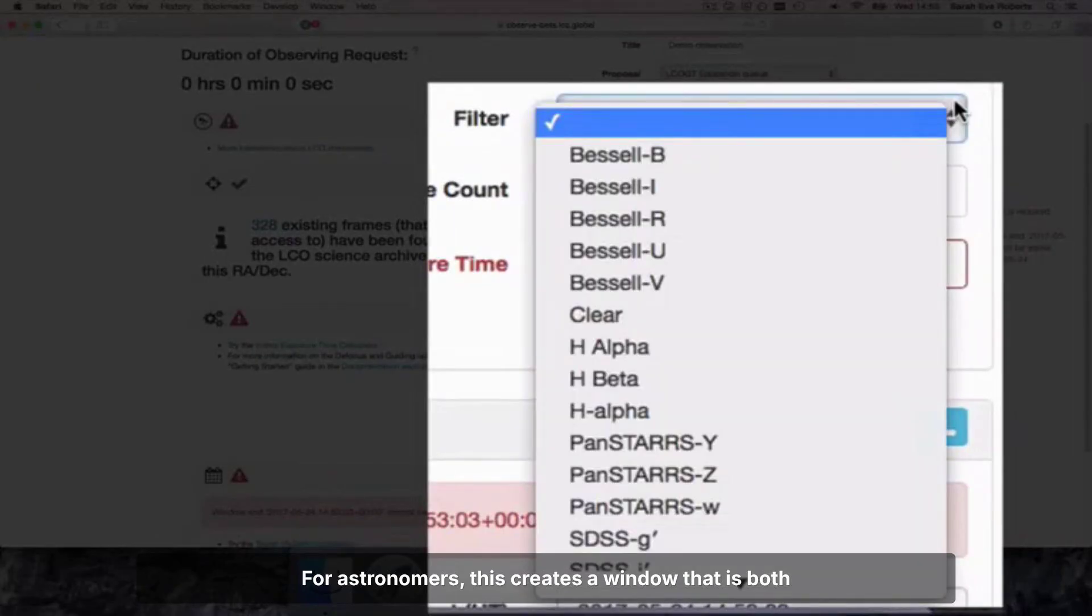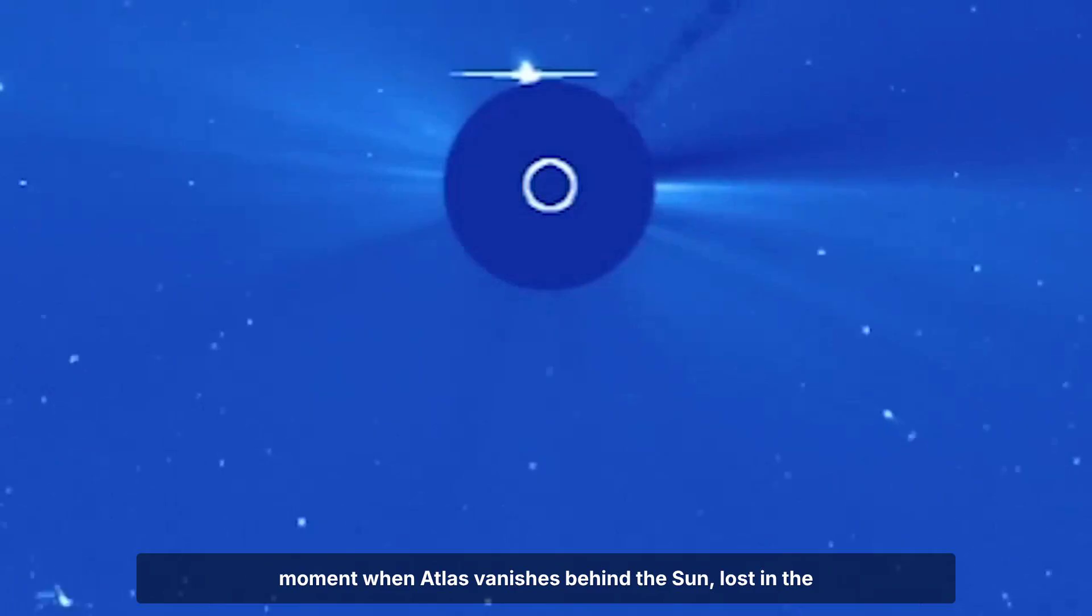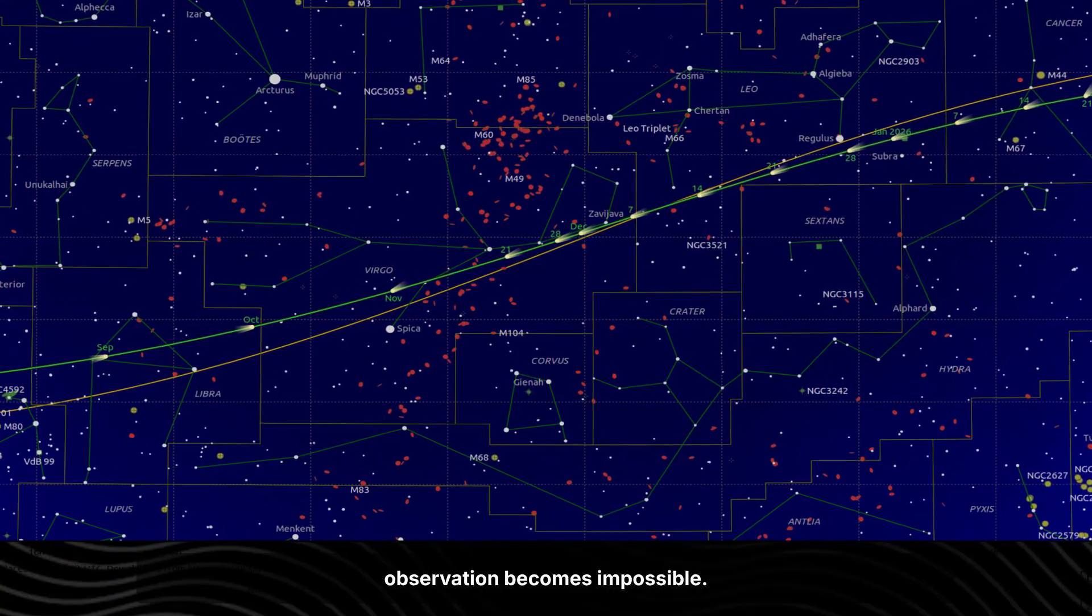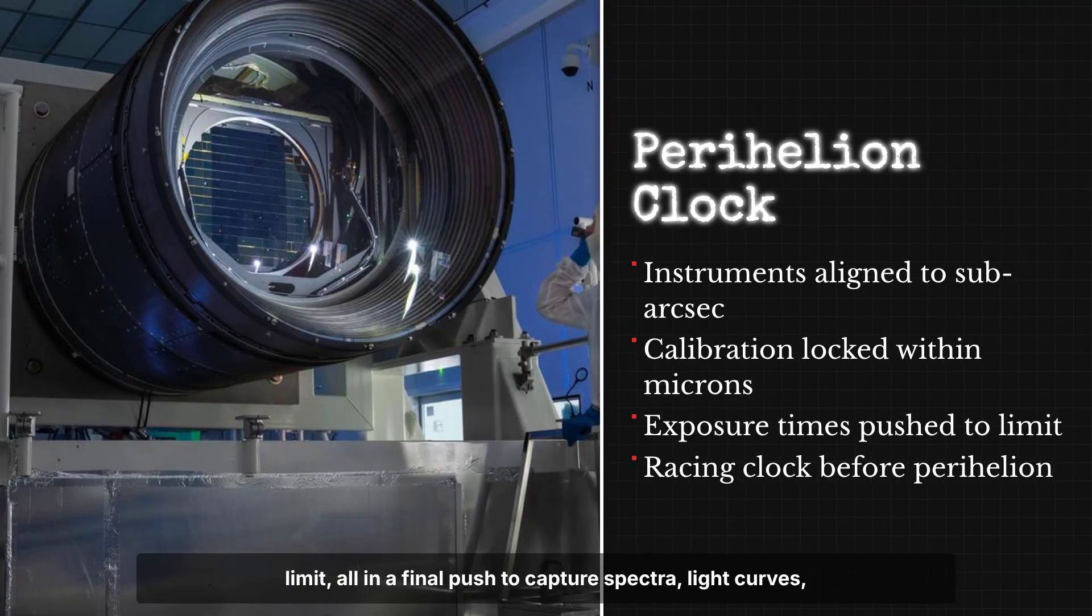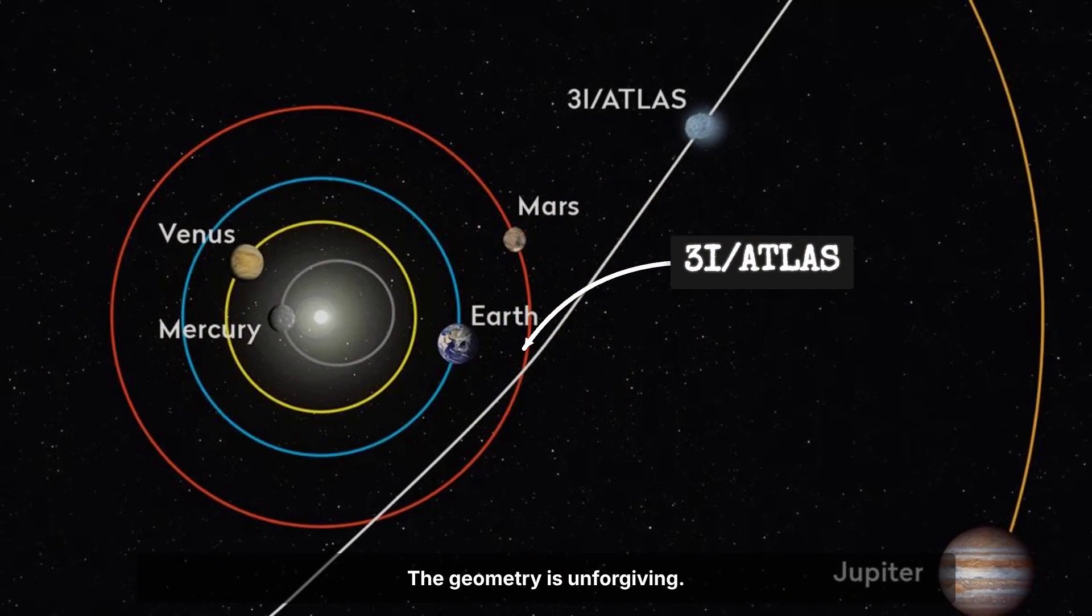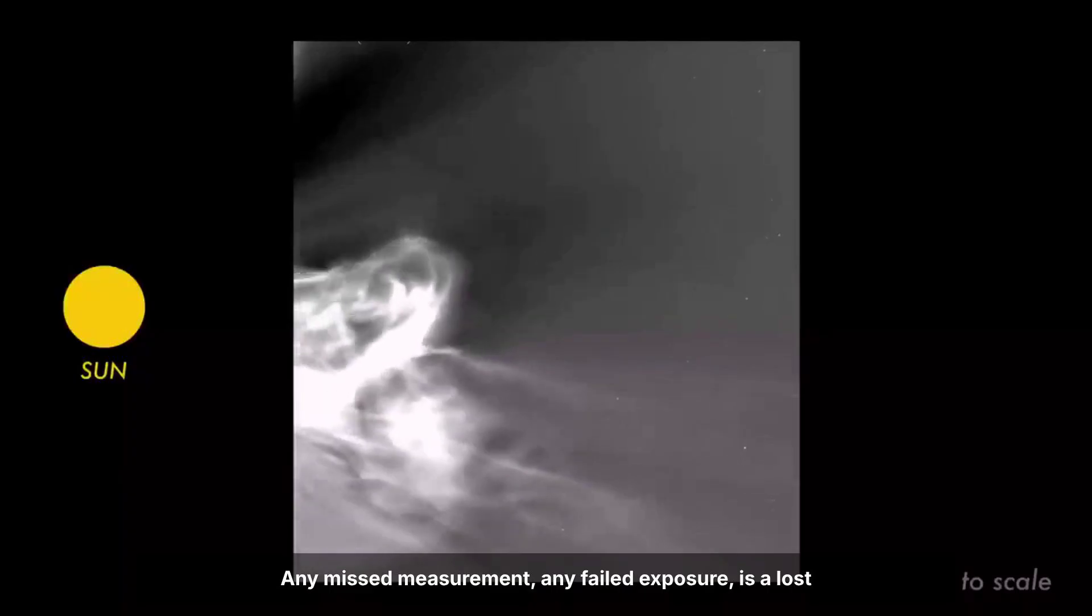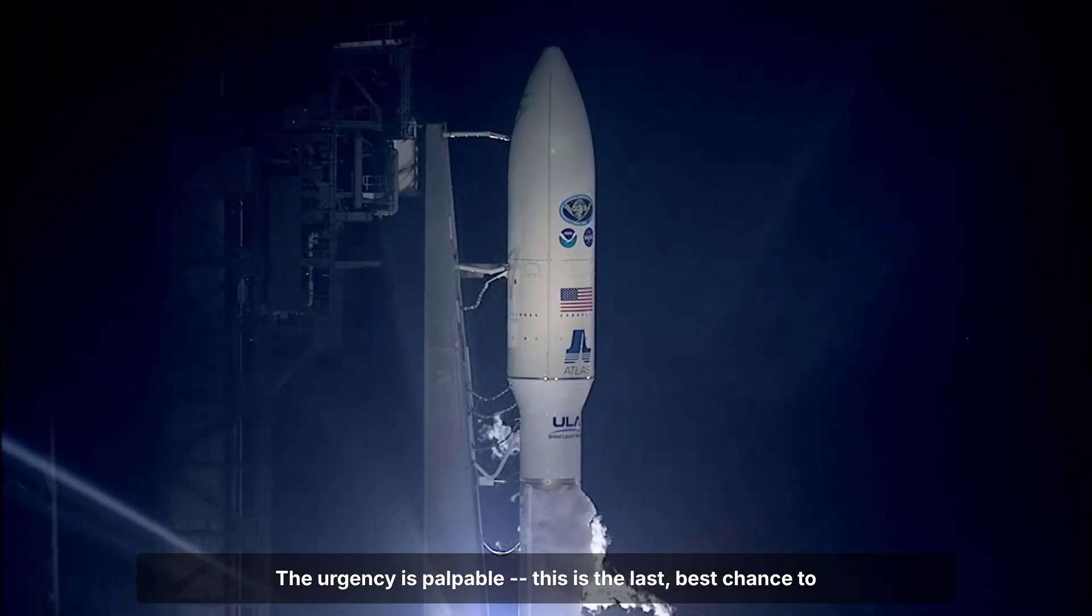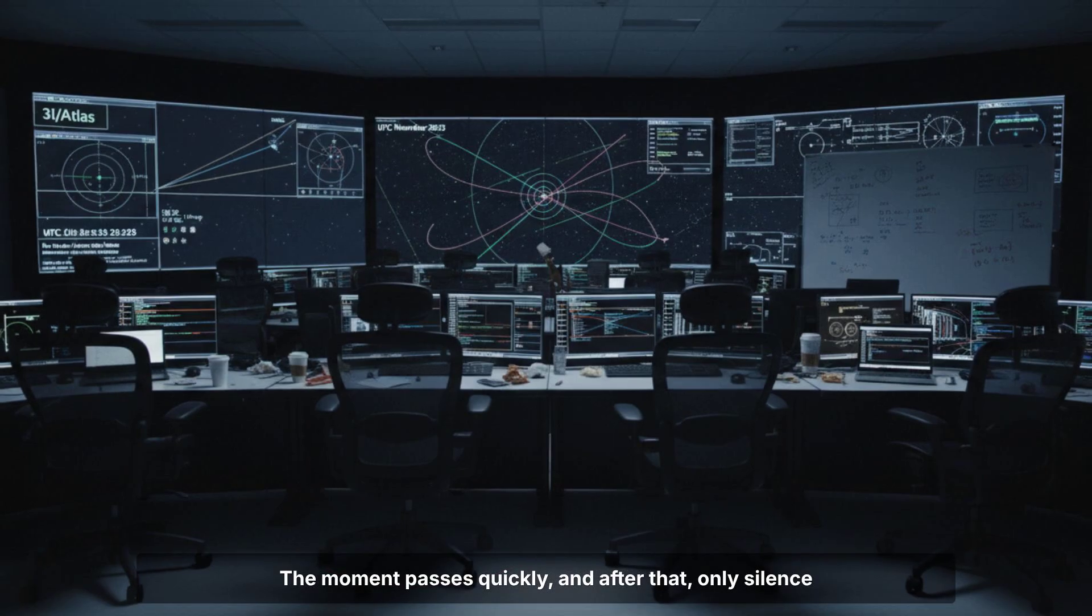For astronomers, this creates a window that is both thrilling and punishingly brief. The clock ticks down not just to perihelion, but to the moment when Atlas vanishes behind the sun, lost in the glare. Every hour brings the visitor closer to a patch of sky where observation becomes impossible. Instruments are calibrated. Exposure times shaved to the limit. All in a final push to capture spectra, light curves, and images before the blackout curtain drops. There's no margin for error. The geometry is unforgiving. Once Atlas crosses that invisible boundary, data collection halts for weeks. Any missed measurement, any failed exposure, is a lost opportunity that will not repeat. The urgency is palpable. The moment passes quickly, and after that, only silence remains.